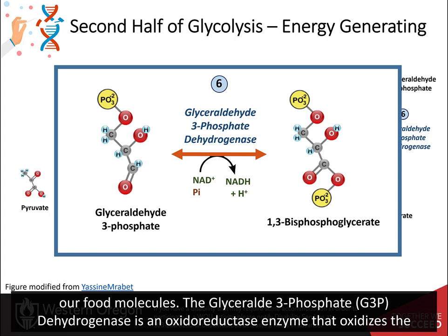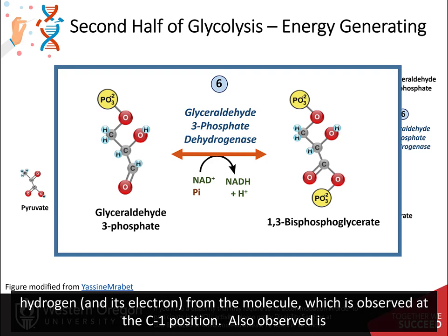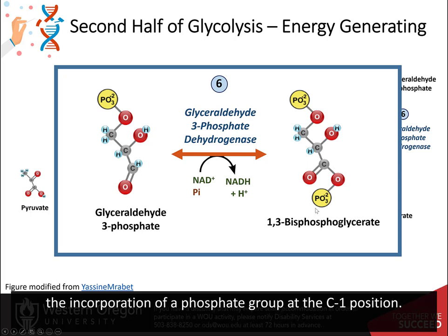Glyceraldehyde 3-phosphate dehydrogenase is an oxidoreductase enzyme that oxidizes glyceraldehyde 3-phosphate and reduces the NAD carrier to NADH and a proton. The name dehydrogenase implies the removal of a hydrogen and its electrons from the molecule, which is observed at the C1 position. Also observed is the incorporation of a phosphate group at the C1 position.